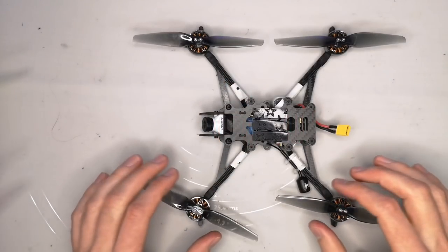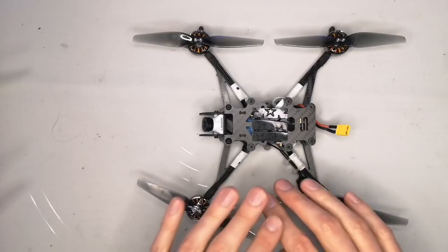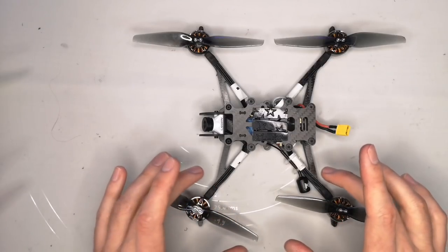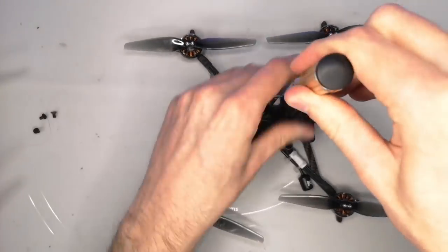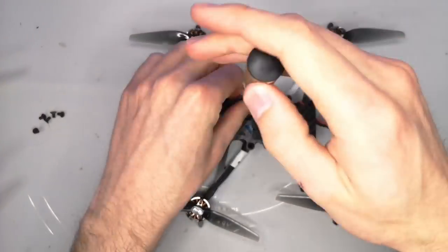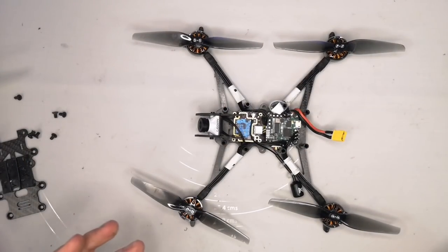So now we've talked a little bit about the frame. Let me take the top plate off this build and we'll talk through the electronics that I've used in my UL5. So with the top plate off we can see all the components of the build nice and clearly.